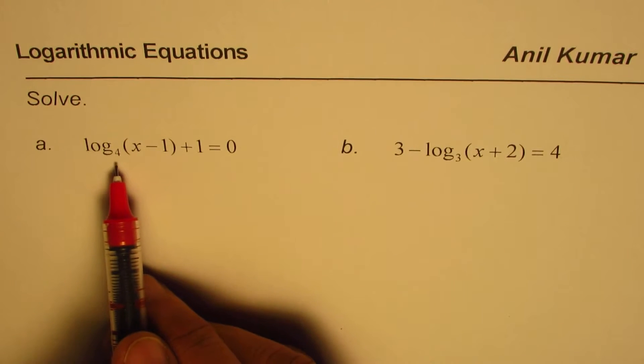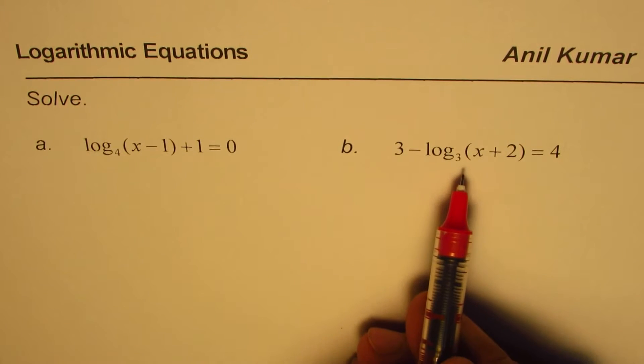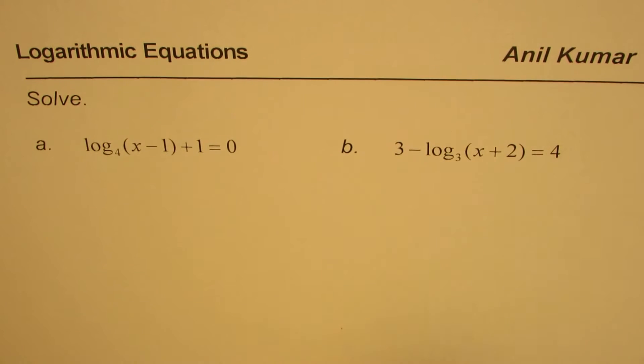Log to the base 4 of x minus 1 plus 1 equals to 0, and 3 minus log to the base 3 of x plus 2 equals to 4.